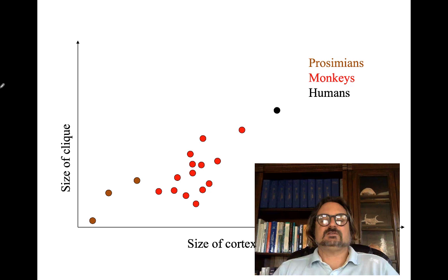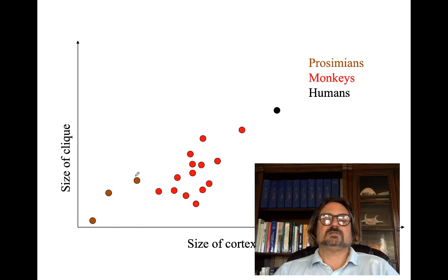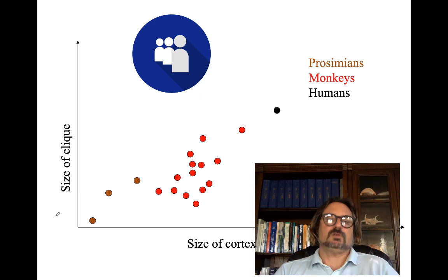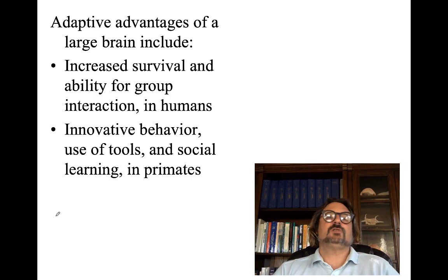Looking at Dunbar's theory about clique size and size of cortex: humans have a large clique size and a much larger cortex. Monkeys have somewhat larger clique size and cortex size. Prosimians are not nearly as large in either clique size or cortex. So we're not saying more Facebook friends makes you smarter — but more genuine relationships usually correlate with being better off.